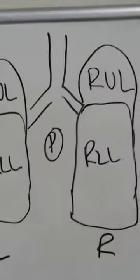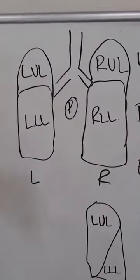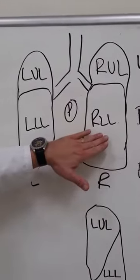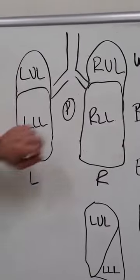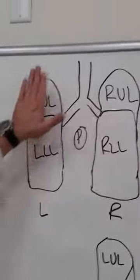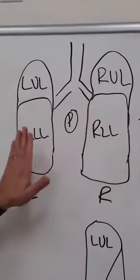When we look at the posterior presentation, you're going to have on the left hand side of the patient the left upper lobe and the left lower lobe. On the right hand side you're going to have the right upper lobe and the right lower lobe. Remembering that when you're auscultating you want to have four on each side. When you auscultate you're going to go from one side to the next because you're comparing the right against the left.